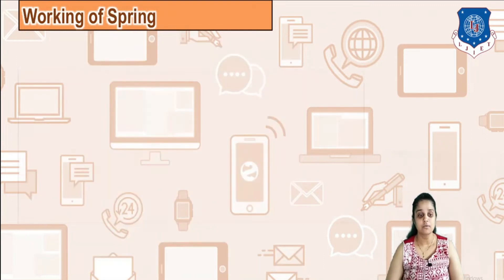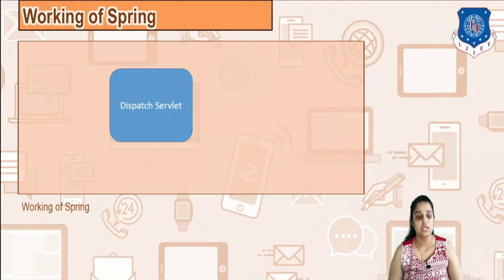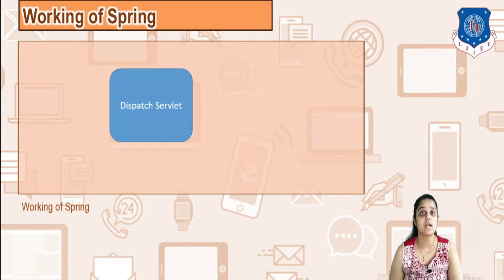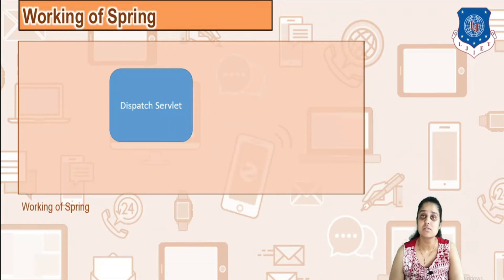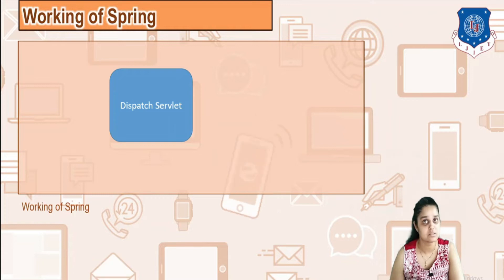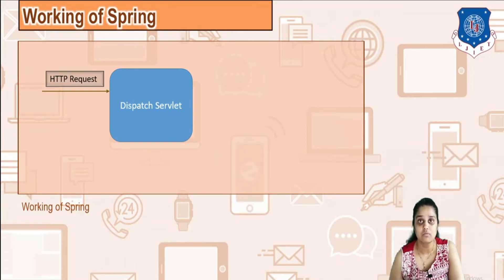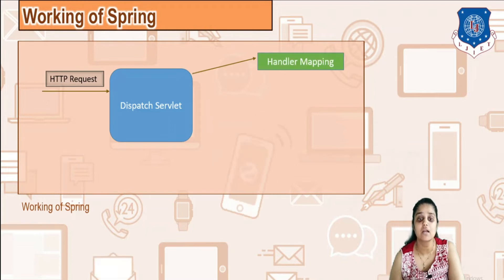Spring works on something called a dispatcher servlet. This dispatcher servlet has total control over everything — it works as a controller handling all requests and routing them to appropriate places. For example, when you get an HTTP request from a client, the dispatcher servlet will first hand it over to something called a handler mapping.